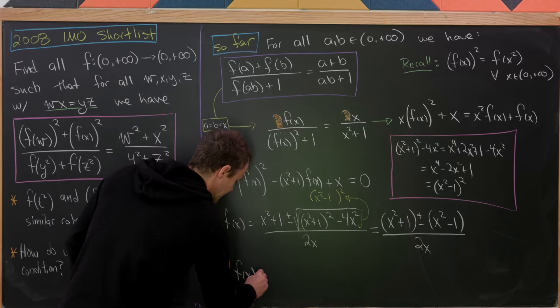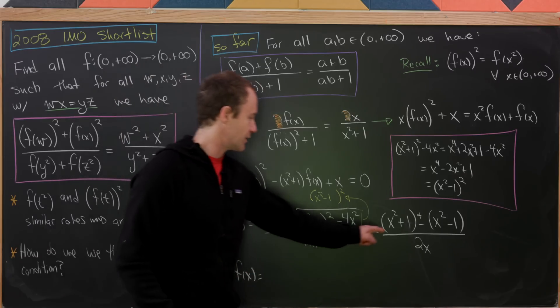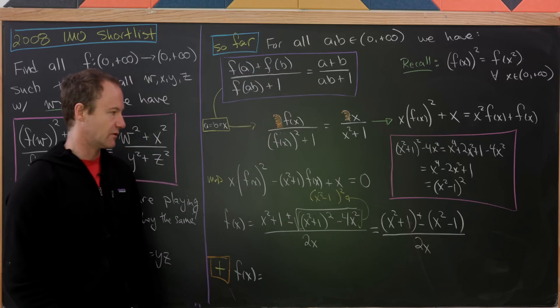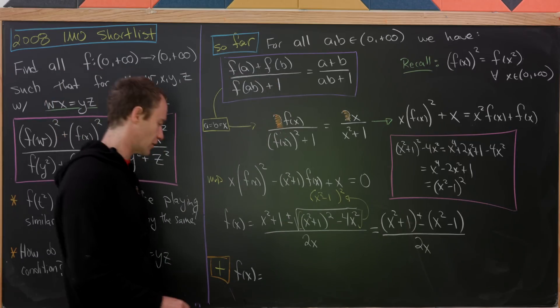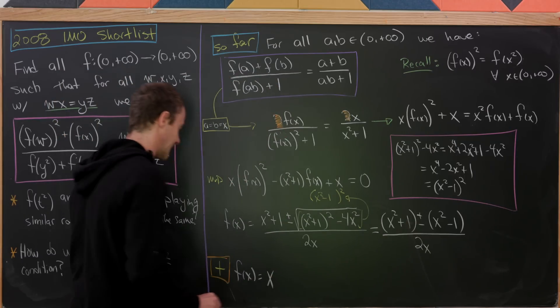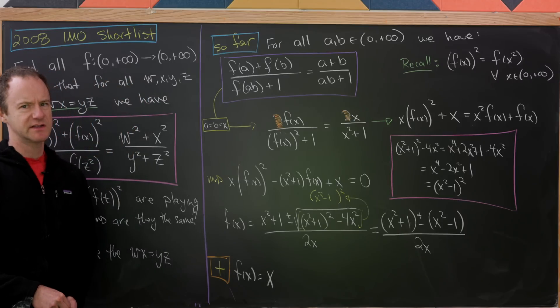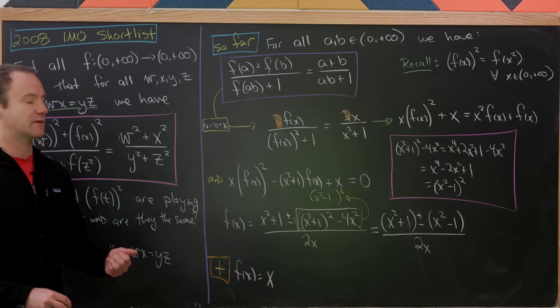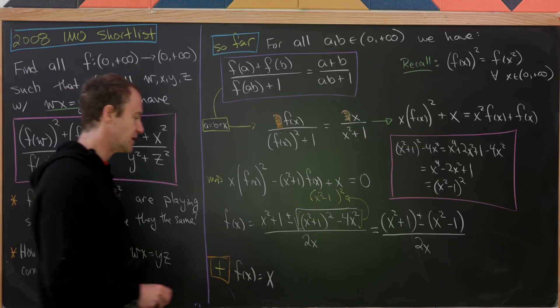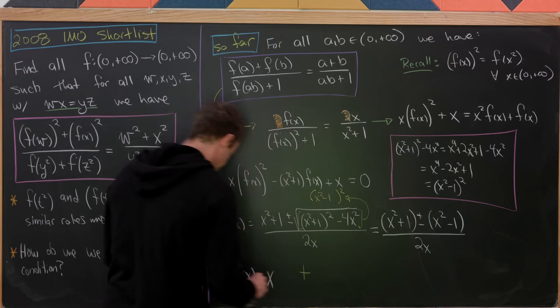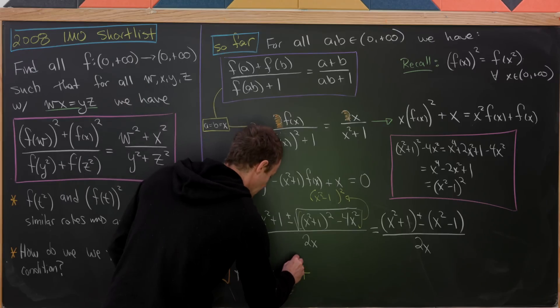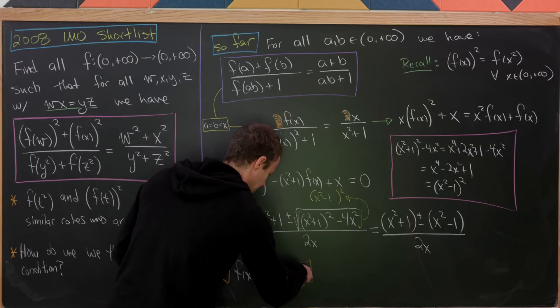And now all we have to do is look at what's happening with the plus and then look at what's happening with the minus. So with the plus, what do we have? With the plus, the ones will cancel and we'll be left with 2x² over 2x. Well, that's simply x. Now, it's probably not a terrible guess from the very beginning that f(x) equals x is a solution here, because I would say it's a solution to over half of all functional equation problems.